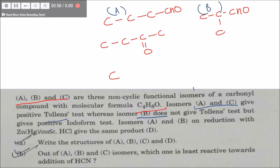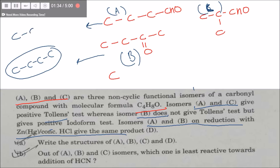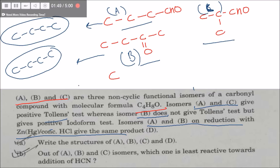A and C give Tollens test, so the aldehydes are A and C, and B is the ketone. A and B on reduction with Zn and HCl give the same product. B is reduced to give 1,2,3,4-butane, so A should also be a straight-chain compound. Therefore, A is butanal, B is butanone, and C is 2-methylpropanal.